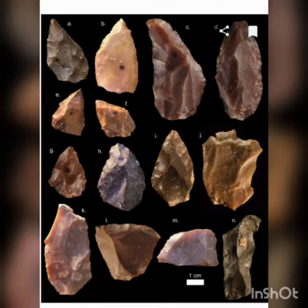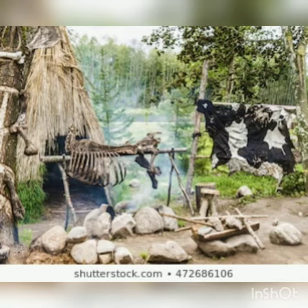The second technique is pressure flaking. In this, the core was placed on a hard surface. A hard stone was used on a piece of bone or stone placed on the core to remove flakes that could be shaped into tools.